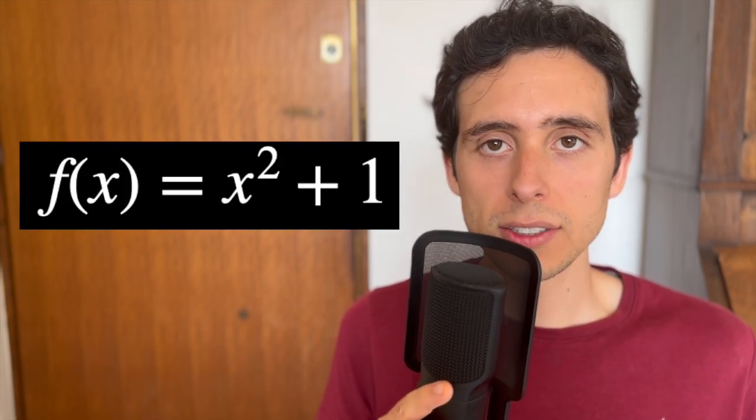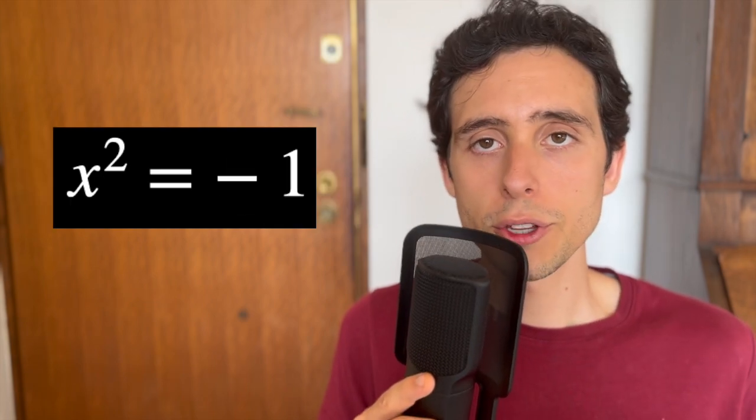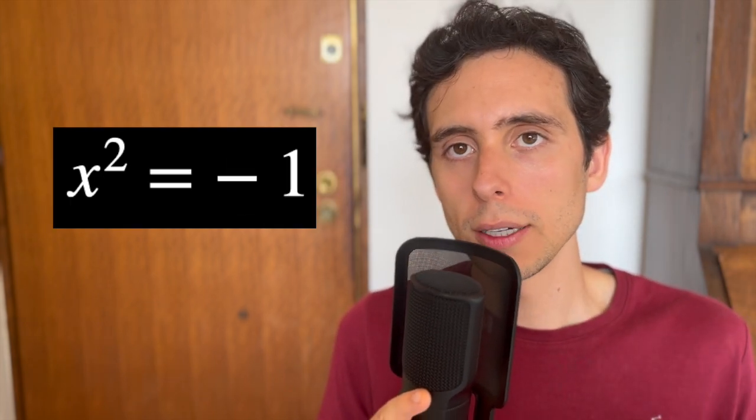If you pick this function, f of x equals x squared plus 1, and try to find the roots of this parabola, we find out that they just don't exist in the real numbers. But in the complex numbers, they do exist.